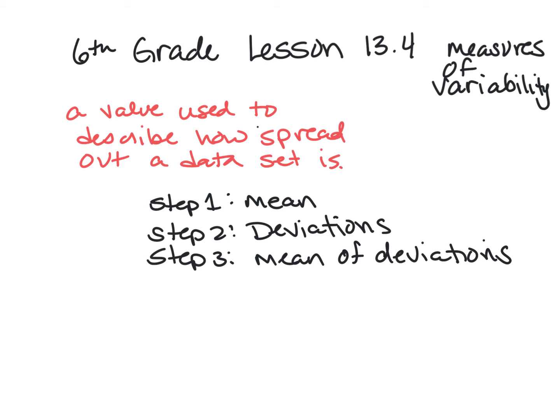There are three steps. Step one is to find the mean of all the data by adding everything together and dividing by how many pieces of data there are. Step two is to find the deviations from the mean — the difference between each piece of data and the mean. Step three is to find the mean of those deviations by adding them all up and dividing by how many there are. That gives us the mean absolute deviation.